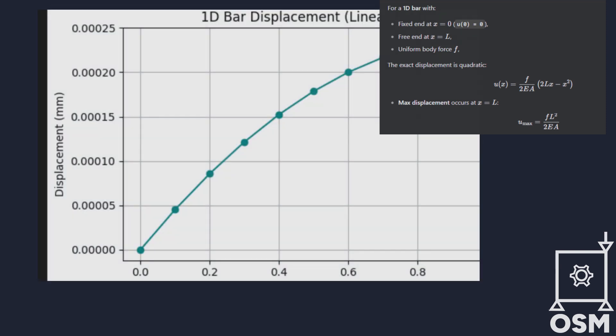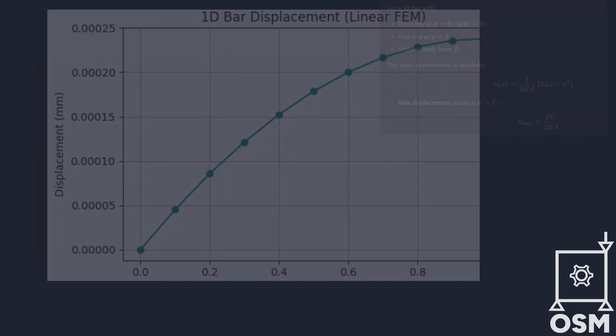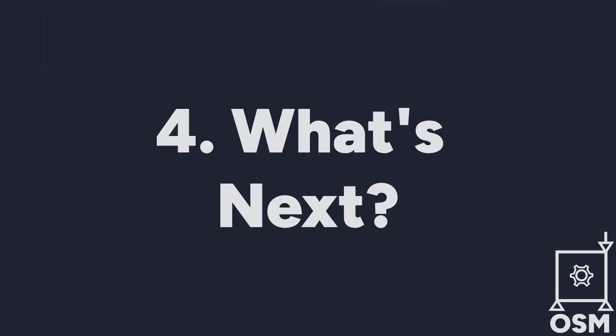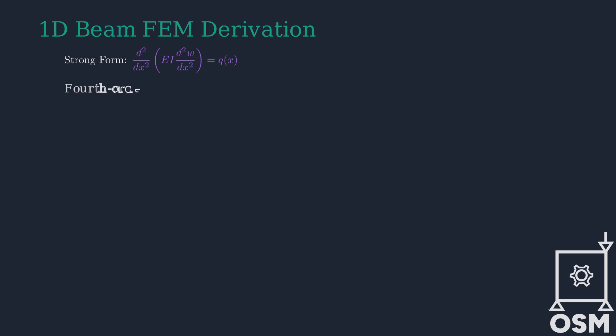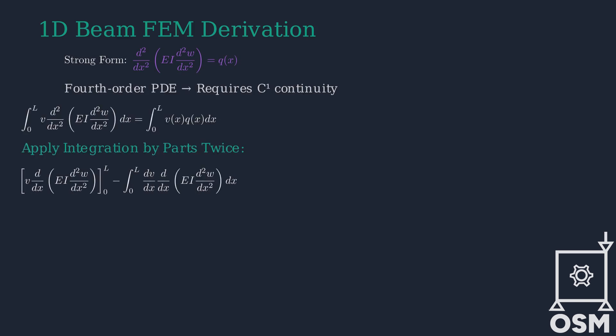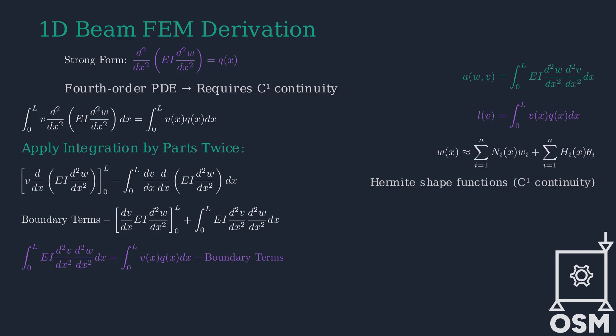This basic code shows how easy it is to implement FEM for 1D problems and forms a foundation for more complex bar and beam models. But what if the structure isn't just a bar? How do we go from a simple axial load to bending in beams? In the next video, we will derive the beam equation from first principles and solve a 1D beam problem using FEM. Don't miss it.